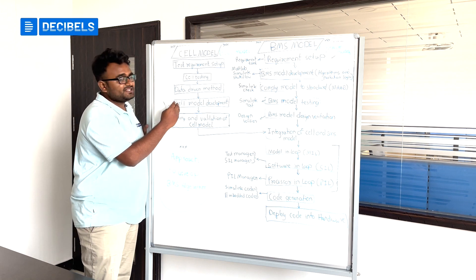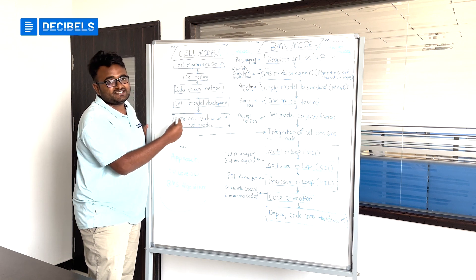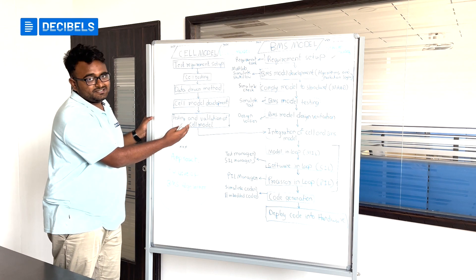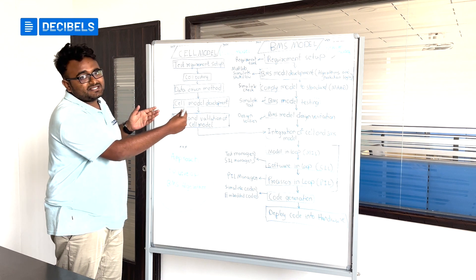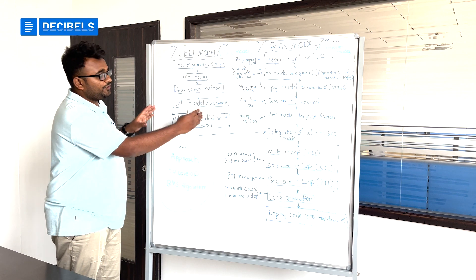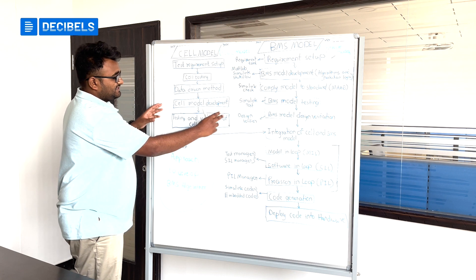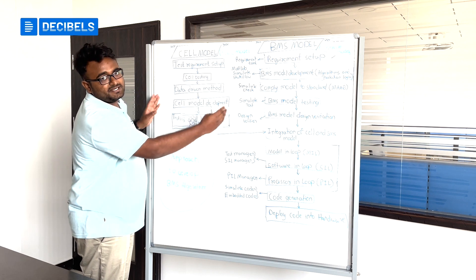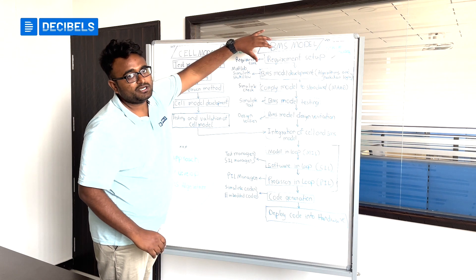Once you are done with the cell model development, you can take the cell model for testing and validation. With different input scenarios and conditions, you can test the cell model and compare that data with real-time cell data gathered from actual hardware. Once the validation of the cell model is done, your plant model development is complete.